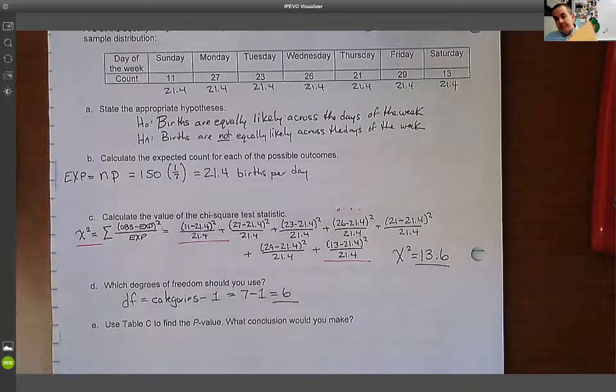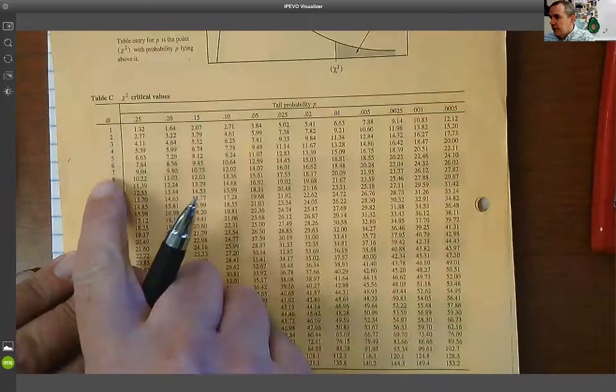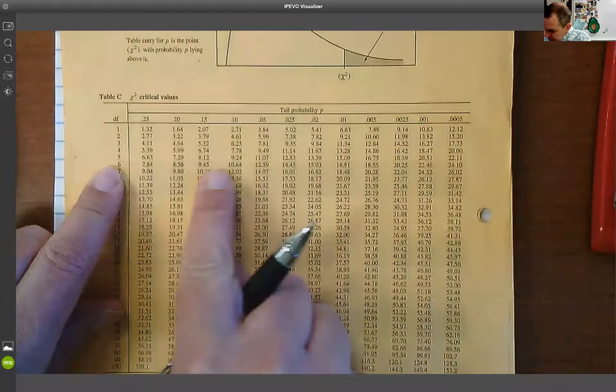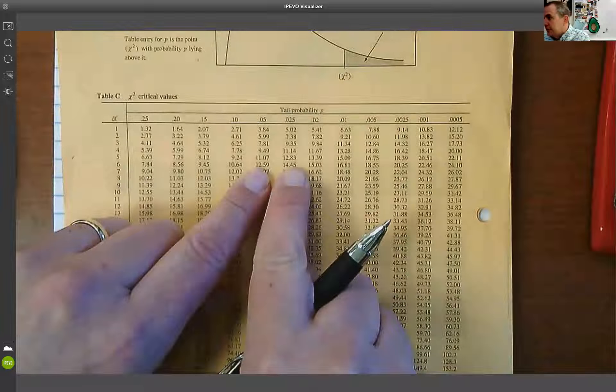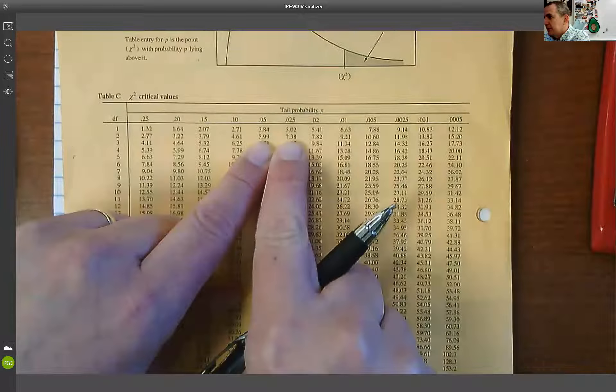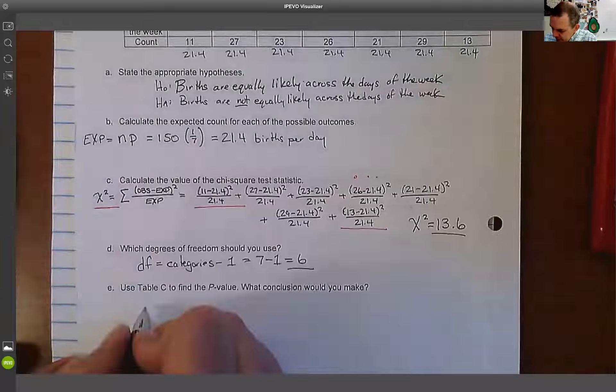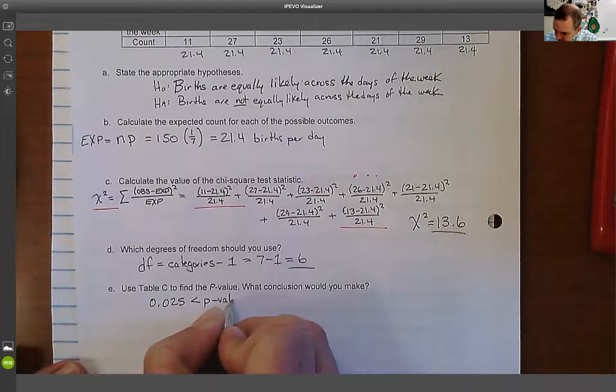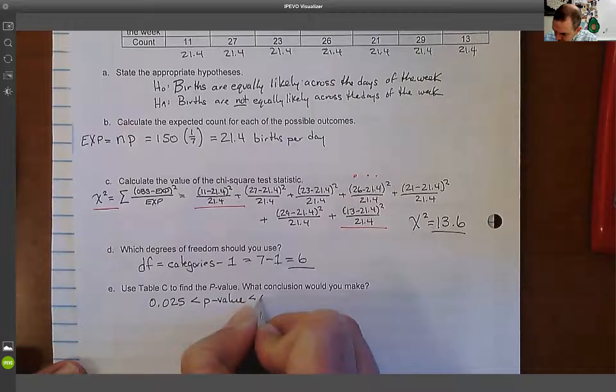The way we do that is we go to table C. We're going to go to the degree of freedom six row. We're going to drag our finger across until we find 13.6. 13.6 would be between these two numbers come up to the top.